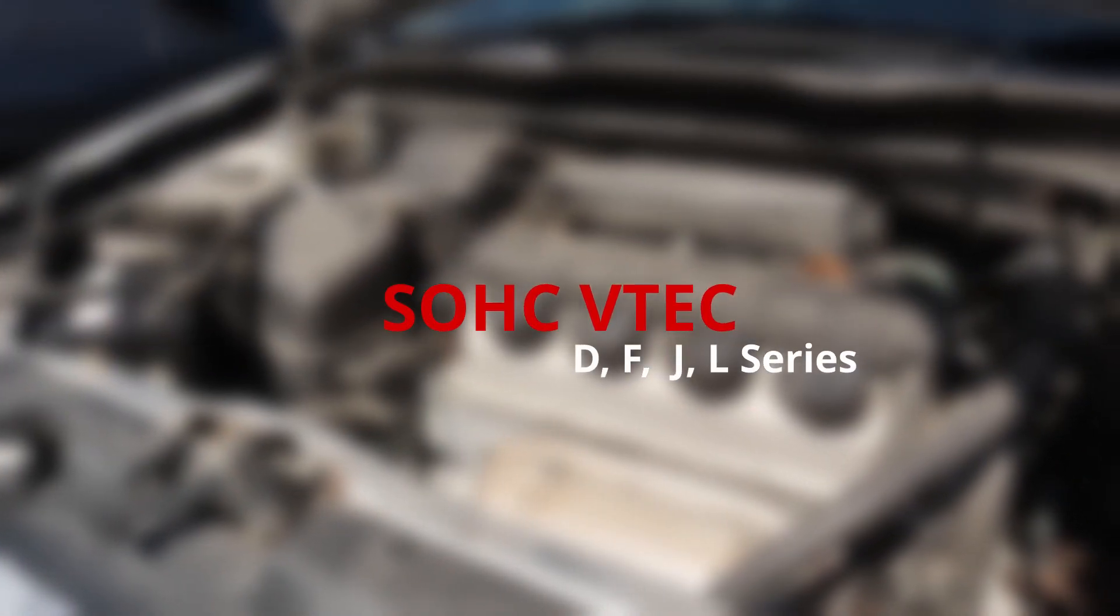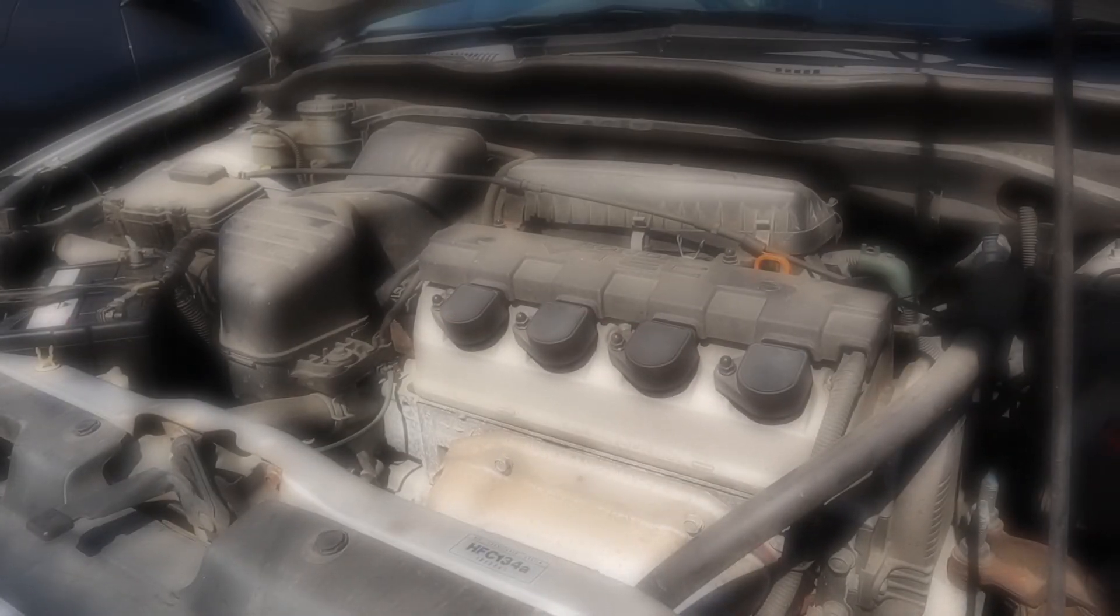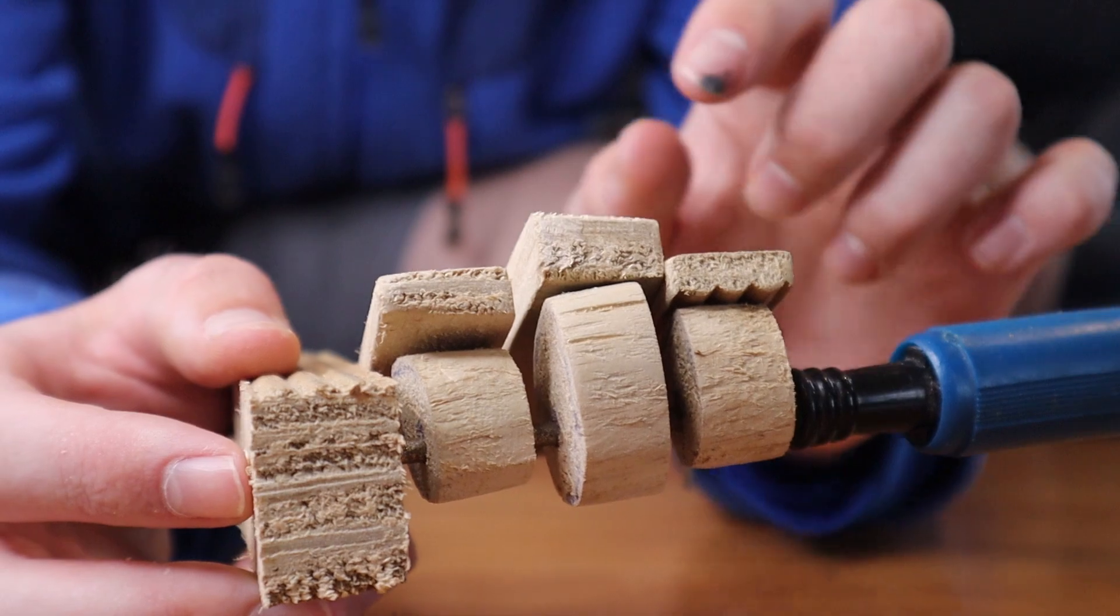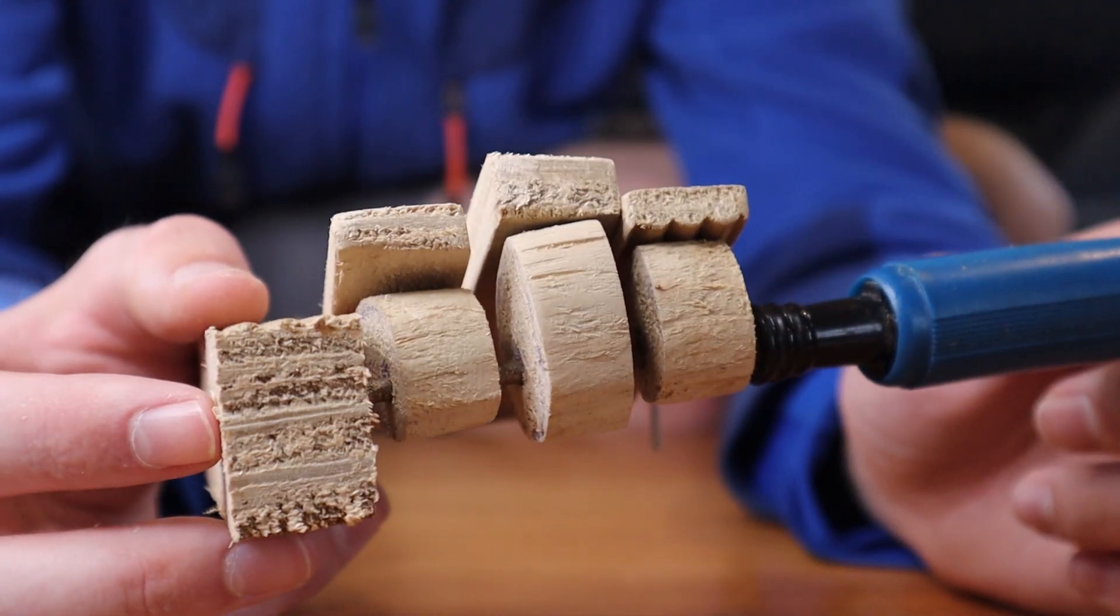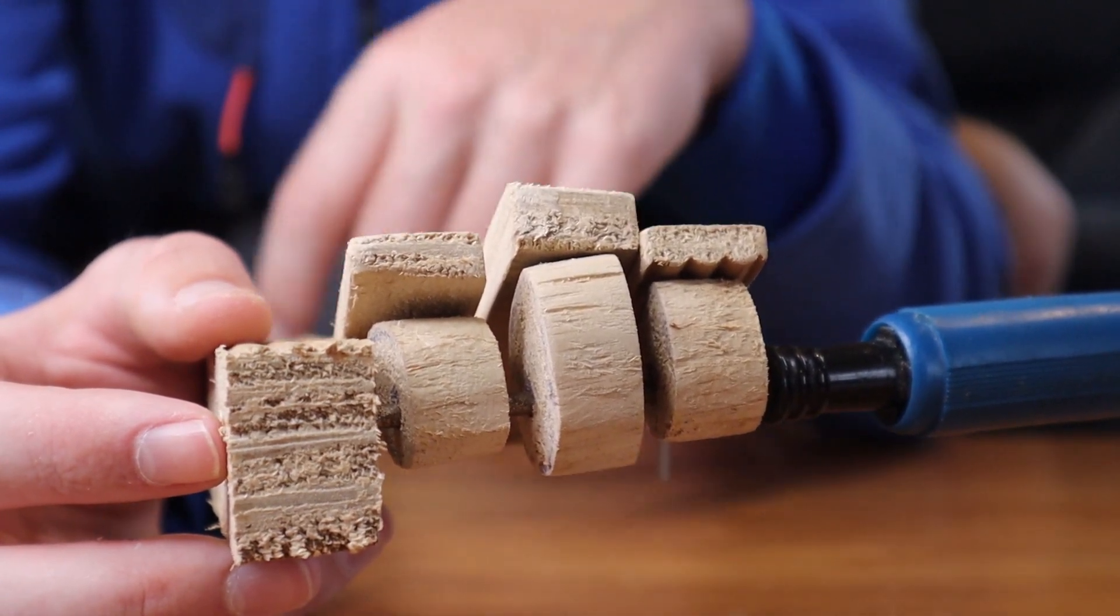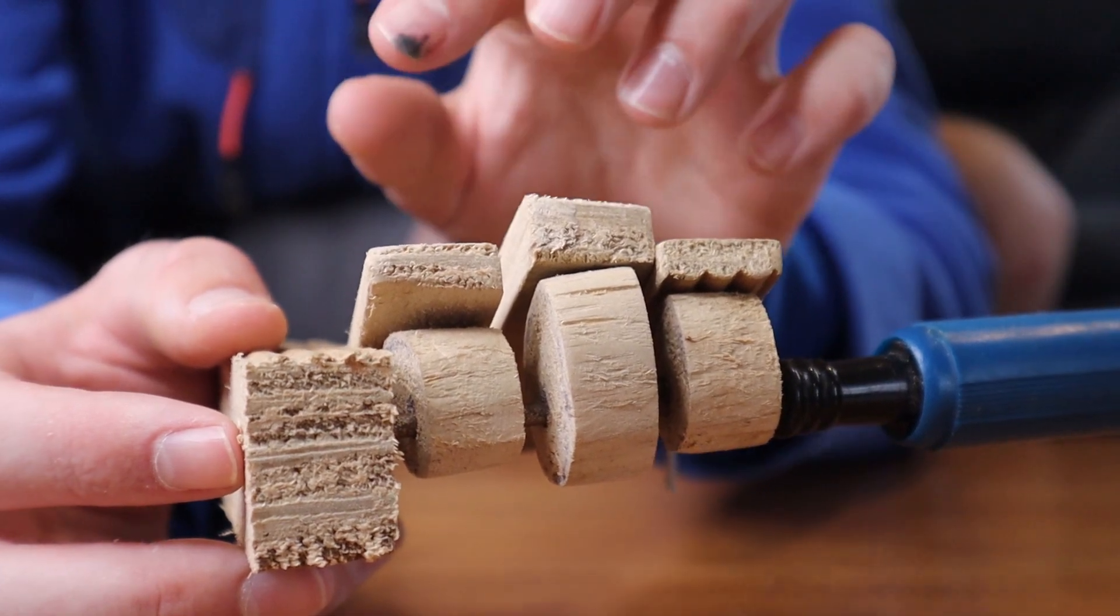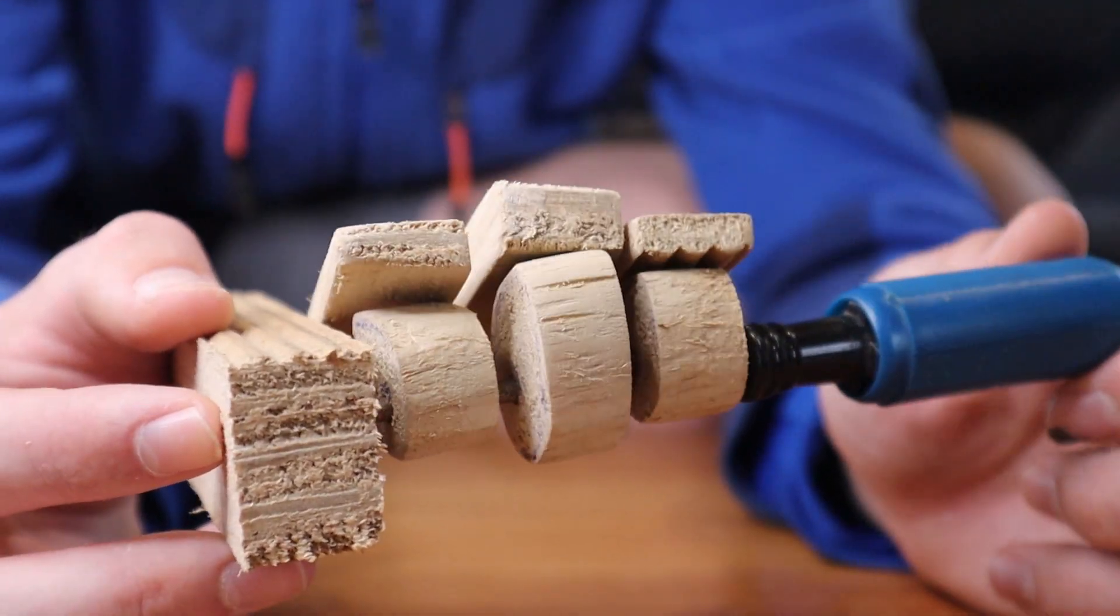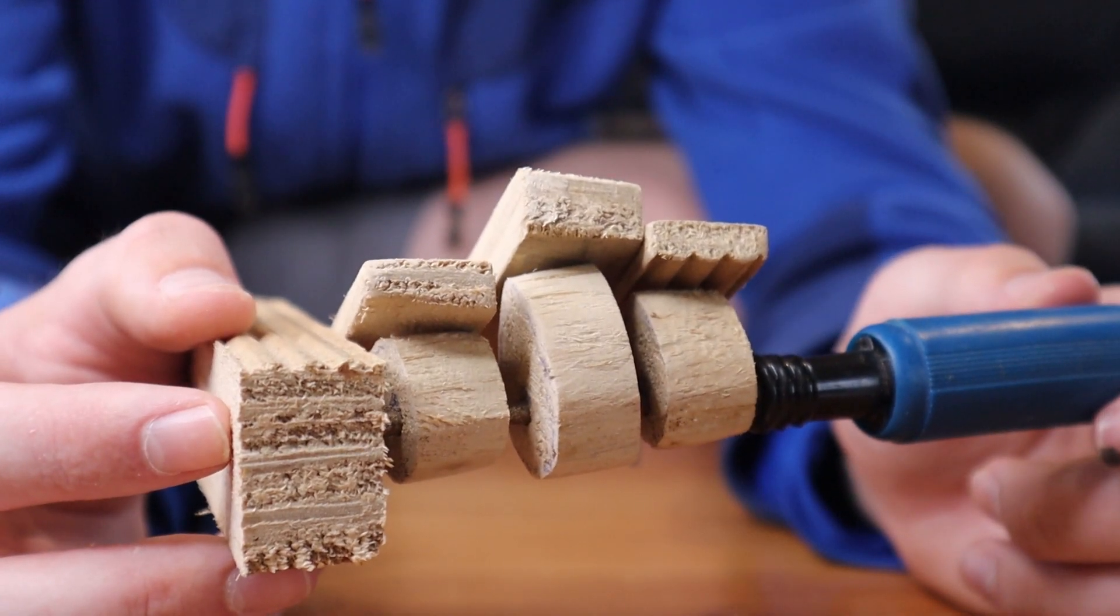SOHC VTEC is used on your less performancey single overhead cam Honda engines. It works in much the same way as DOHC VTEC except of course it's only got one camshaft, which means it can only put VTEC on the intake side. So there's nothing on the exhaust side, just works like normal cams. The intake side is the only one that has the VTEC, and as a result it's not quite as performancey as your good old DOHC VTEC.